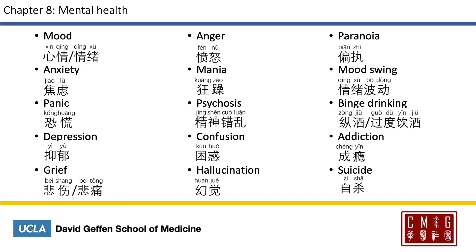For mental health symptoms, mood is translated as 心情 or 情绪. Anxiety is 焦虑. Panic is 恐慌. Depression is 抑郁. Grief is 悲伤 or 悲痛. Anger is 愤怒, and mania is 狂躁. Psychosis is 精神错乱. Confusion is 困惑, and hallucination is 幻觉.